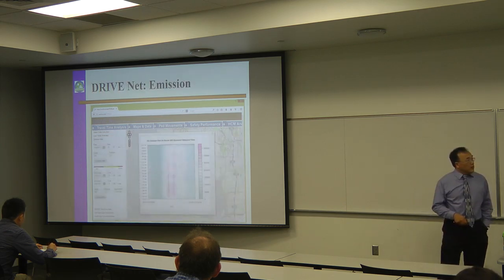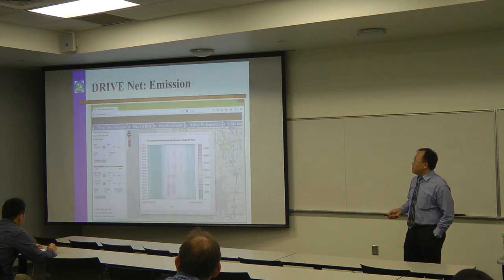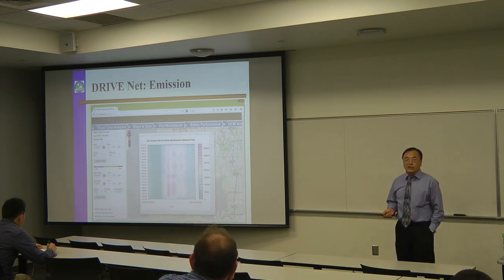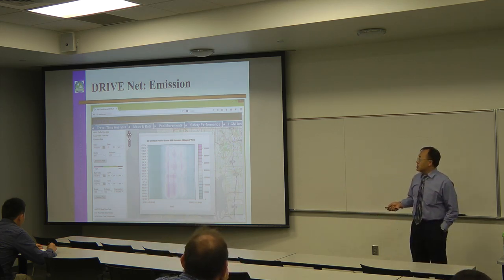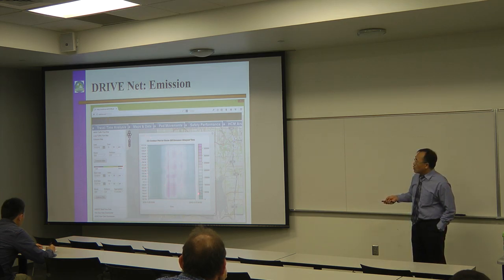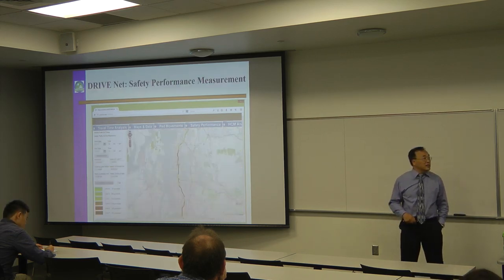We also looked at how traffic affects the environment. We ran a test on a corridor to examine emissions. This is an emission contour map — you can see at what time and at which mile post location there are more pollutants of any kind, helping to improve the system.